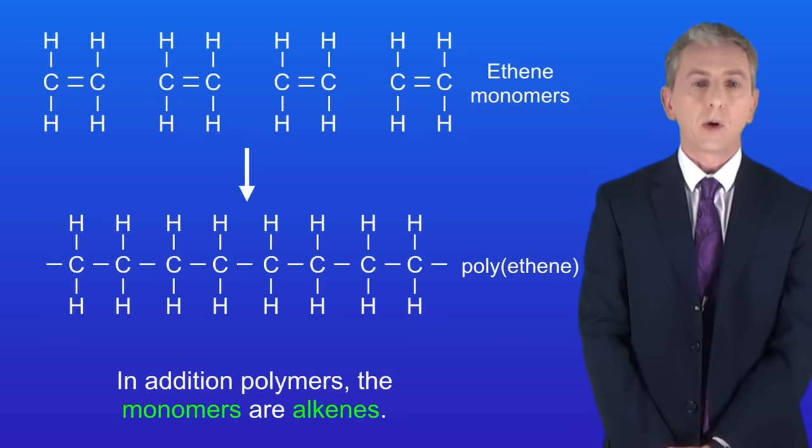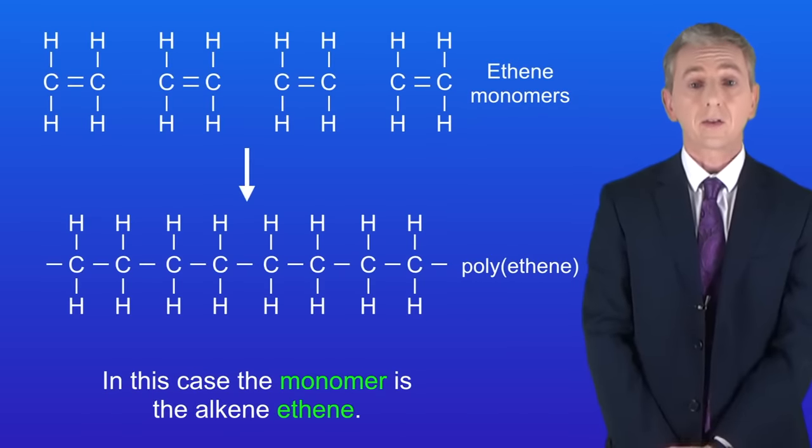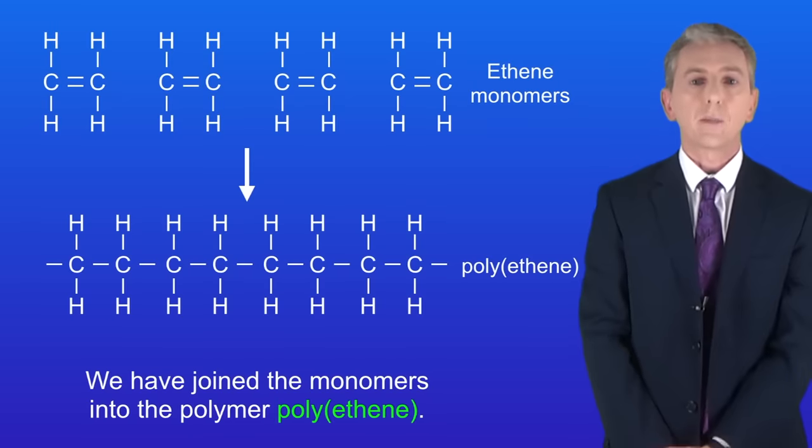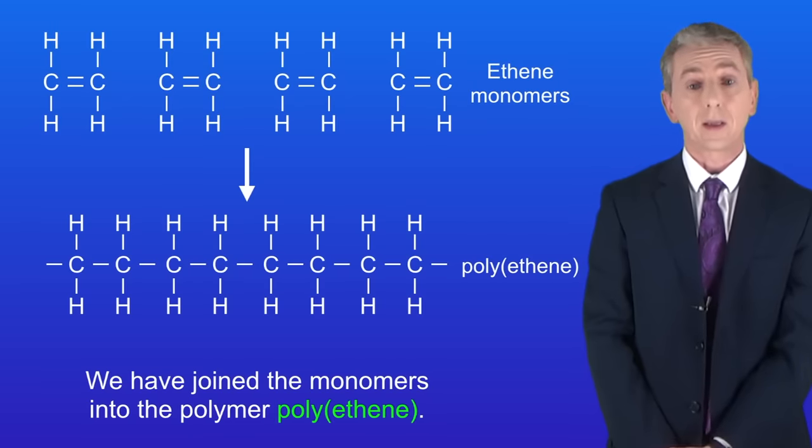In addition polymers the monomers are alkenes, and in this case the monomer is the alkene ethene. We've joined the monomers into the polymer polyethene.